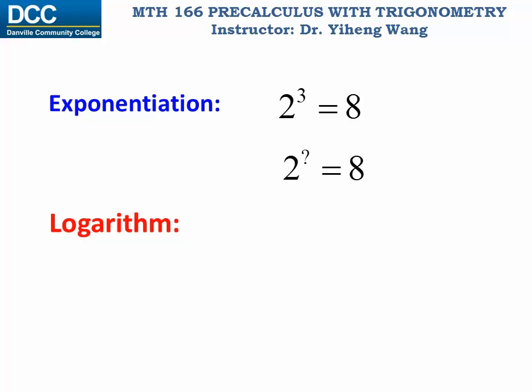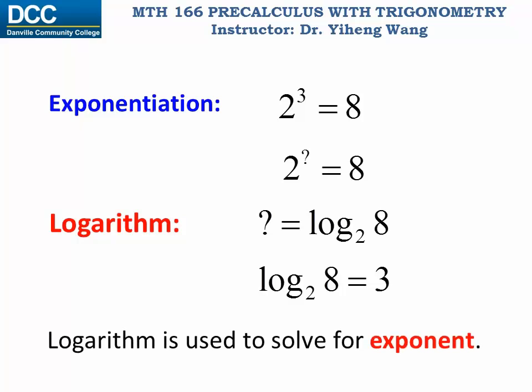So the question mark can be rewritten as log base 2 of 8. And since we know that 2 raised to the third power equals to 8, therefore log base 2 of 8 equals to 3. And if it won't cause confusion, you can simply read this as log 2 of 8 equals to 3. Once again, logarithm is used to solve for exponent.